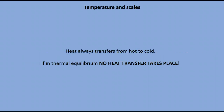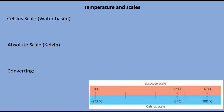Now we need to have a quick look at temperature and scales, remembering that heat will always travel from hot to cold, and if there's no difference in temperature between two objects — if they are in thermal equilibrium — then no heat transfer will take place at all. The scale we commonly use in the lab is the Celsius scale, based on the boiling point and freezing point of water, where the ice point is 0°C and the vapour point is 100°C.